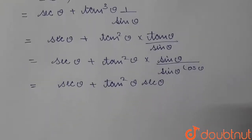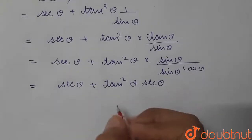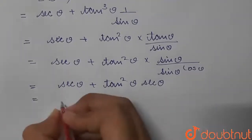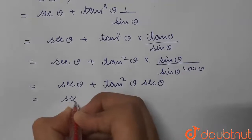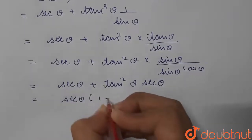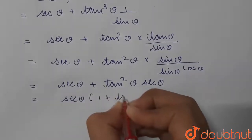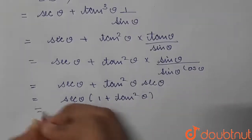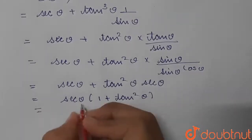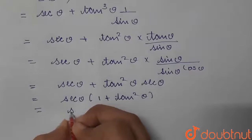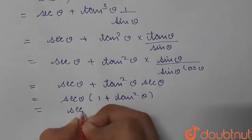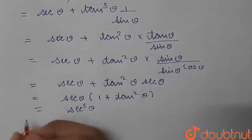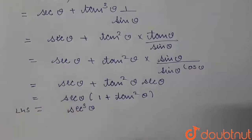We will take out sec theta as common first. So we are left with 1 plus tan squared theta. And we know that 1 plus tan squared theta is equal to sec squared theta. So we can write here sec theta into sec squared theta, which gives us sec cubed theta. This is the value for the left hand side.